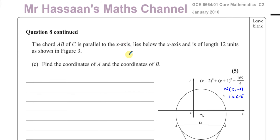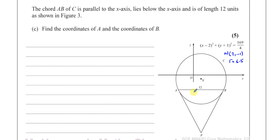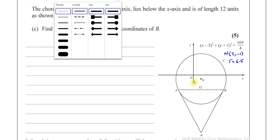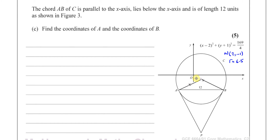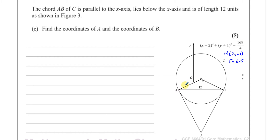Now let's go on to part c. The chord AB of the circle C is parallel to the x-axis, lies below the x-axis, and is of length 12 units, as shown in Figure 3. Find the coordinates of A and B. I know that the radius of this circle is 6.5 as we found in part b, and I know the coordinates of center N are (2, −1).